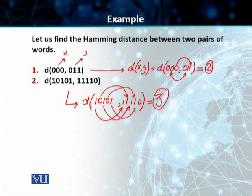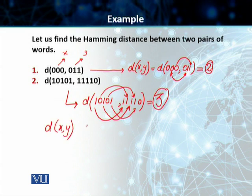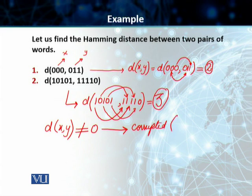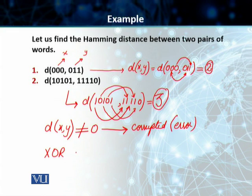Now students, the reason this Hamming distance is important is because the Hamming distance between the sent and the received code word tells us how many bits are corrupted. If the Hamming distance is not equal to 0 between the sent and the received code word, that tells us that our data is corrupted and we have an error. So this Hamming distance needs to be ultimately 0. How we find this out is we use the exclusive OR operation, which we also represent by a plus sign within a circle.